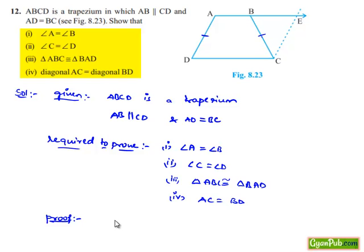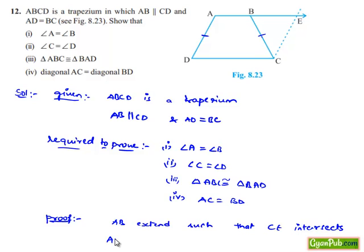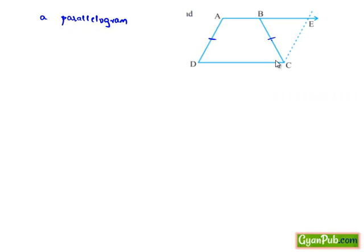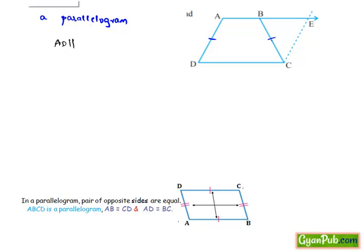In order to prove this, let us extend AB such that CE intersects AB at E, and thereby AECD forms a parallelogram. As AECD is a parallelogram, we can say AD is parallel to EC and also AD is equal to EC.